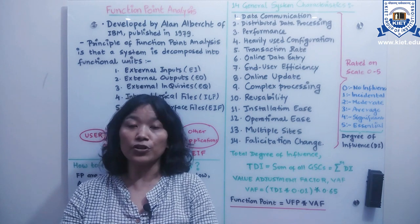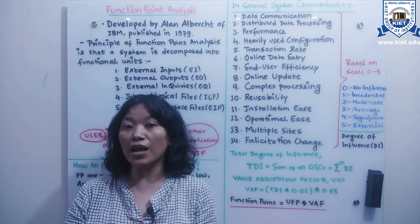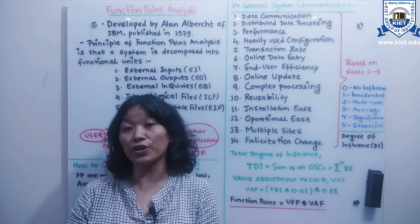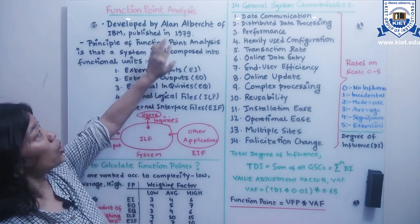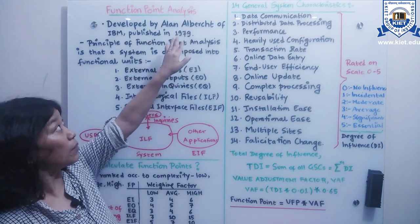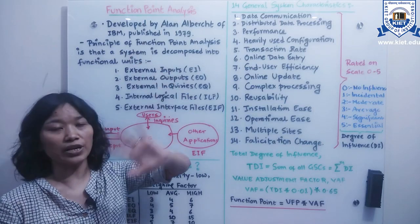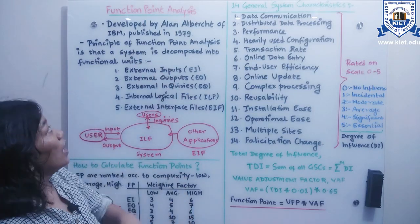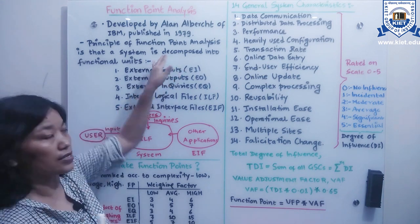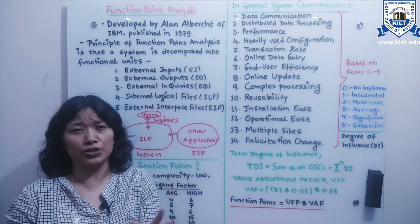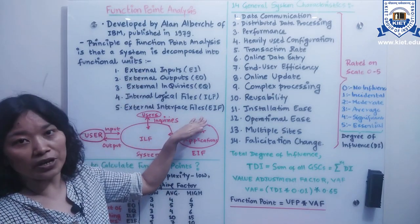Function point analysis considers function points as the unit of measurement of the defined functionality of the software system. Function point analysis was developed by Alan Albrecht, who published it in 1979. According to his principle, any software application or system can be decomposed into five important functional units.